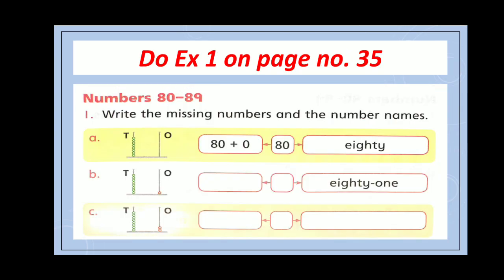Now open page number 35 and do exercise 1. Numbers from 80 to 89. Write the missing numbers and the number names. Complete all the parts in book.